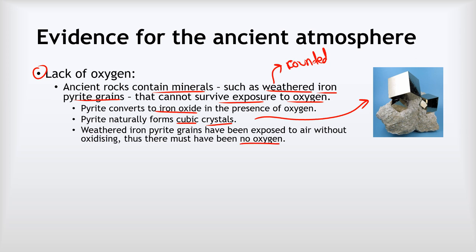Now the fact that they remained as pyrite means that the air that was blowing them around and weathering them must have had no oxygen in it. So these minerals like weathered iron pyrite they can tell us that there must have been no oxygen present in the atmosphere when they formed because if there was they would have got oxidized to iron oxide.